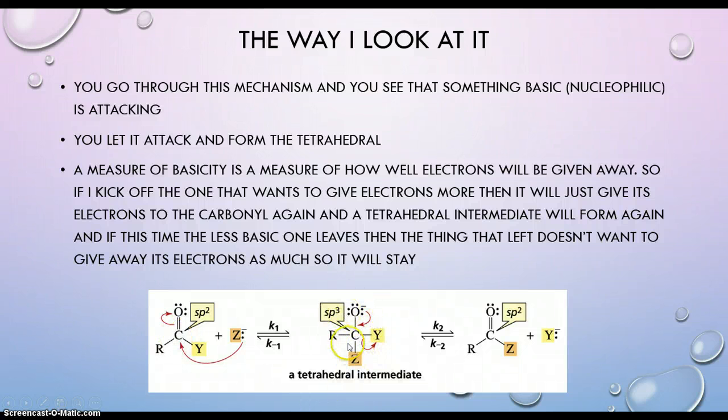So if we're analyzing this tetrahedral intermediate and trying to figure out which one's leaving, if we kick off the Z, it still wants to give its electrons more than this Y does. We're going to form this Y again, but right back after we form that, the base is going to come in and attack again. Now if we get the Y to leave, because it doesn't want to give its electrons as badly as Z does, if we get the Y to leave and form this structure, this Y, if it happens to attack again, will not stay as connected as this Z will. The Z is a stronger base and wants to give its electrons more strongly to this carbonyl than the Y does.